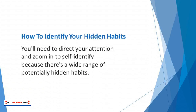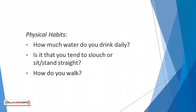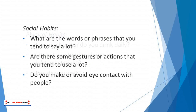How to identify your hidden habits: you'll need to direct your attention and zoom in to self-identify, because there's a wide range of potentially hidden habits. There are some questions you'll have to ask. Physical habits: how much water do you drink daily? Do you tend to slouch or sit and stand straight? How do you walk? Social habits: what are the words or phrases that you tend to say a lot? Are there some gestures or actions that you tend to use a lot? Do you make or avoid eye contact with people?